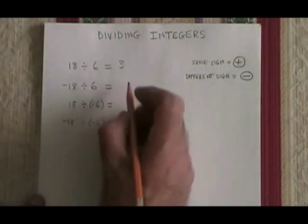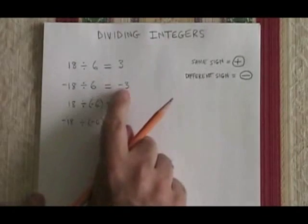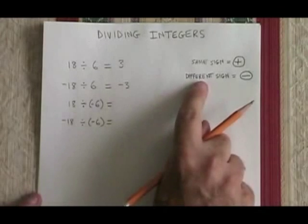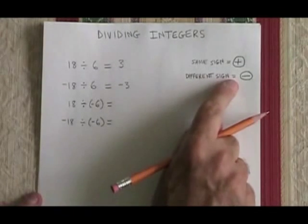Negative 18 divided by 6 is equal to negative 3. How do I know that? Because when you have different signs in a division, the answer will always be negative.